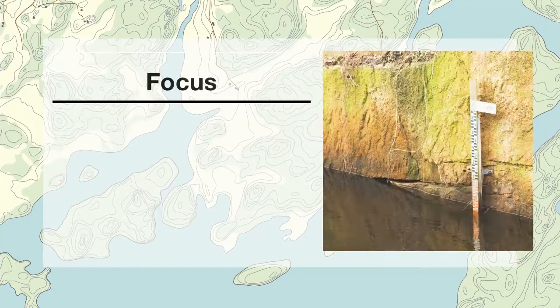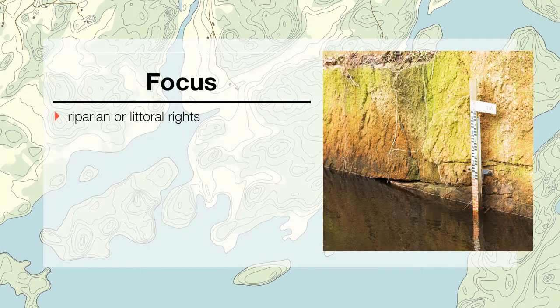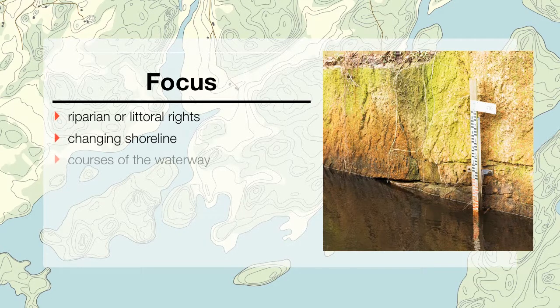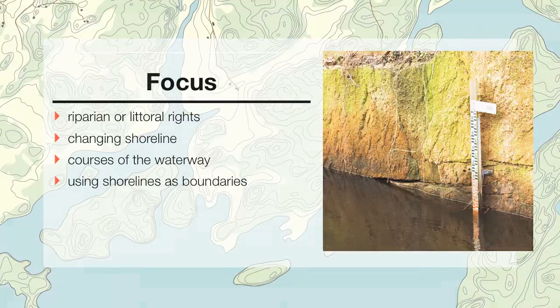Our discussion will focus on what Wilson defines as problems two through four: riparian or littoral rights, changing shoreline or courses of the waterway, and using shorelines as boundaries.